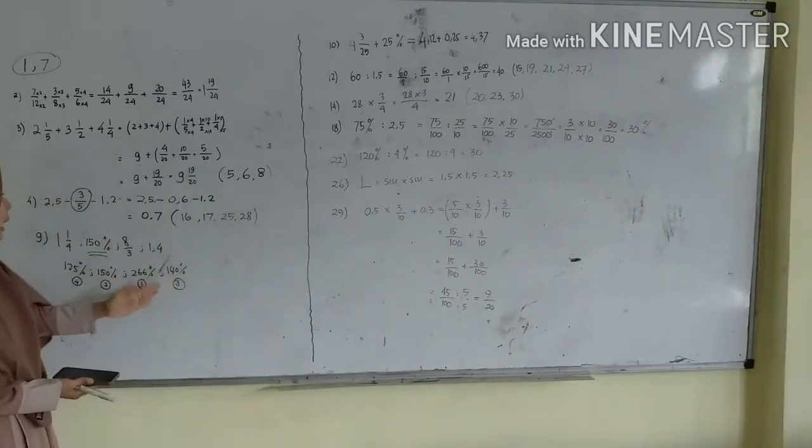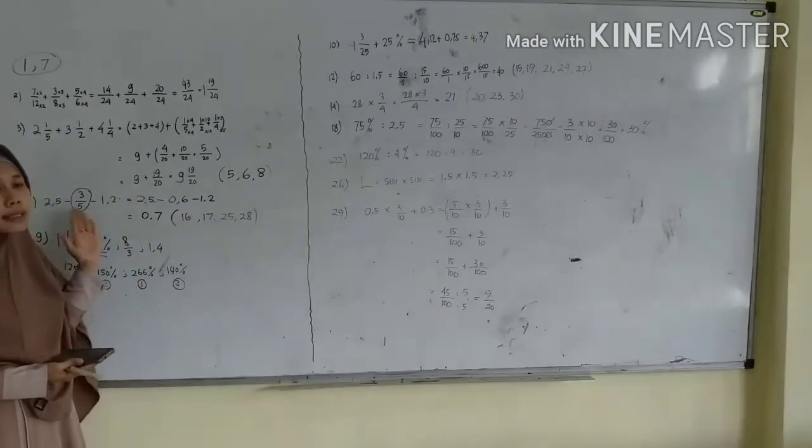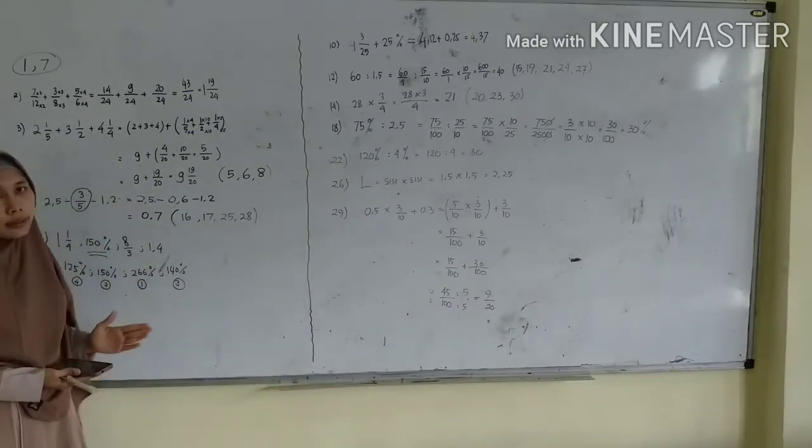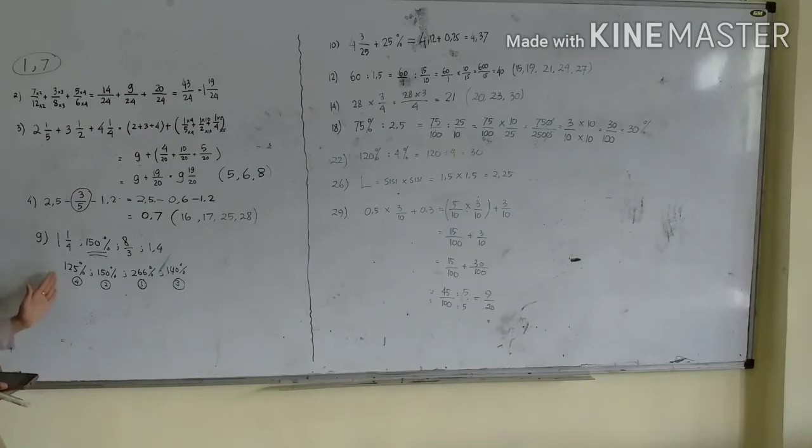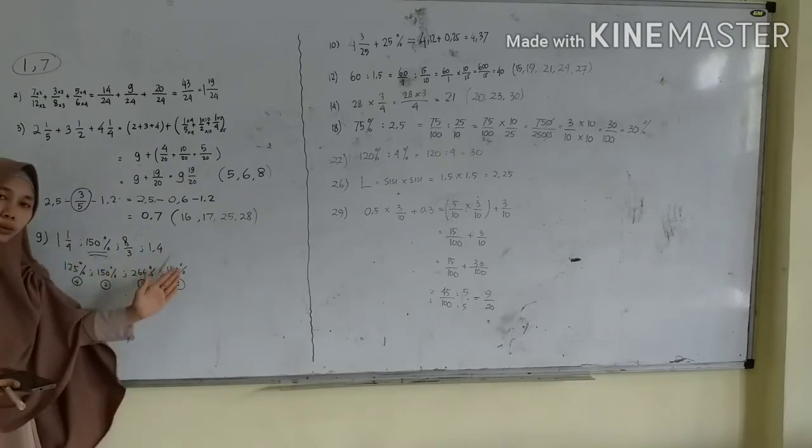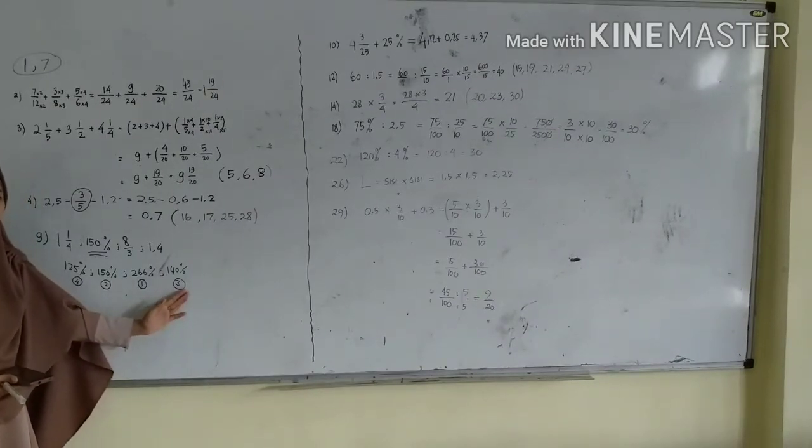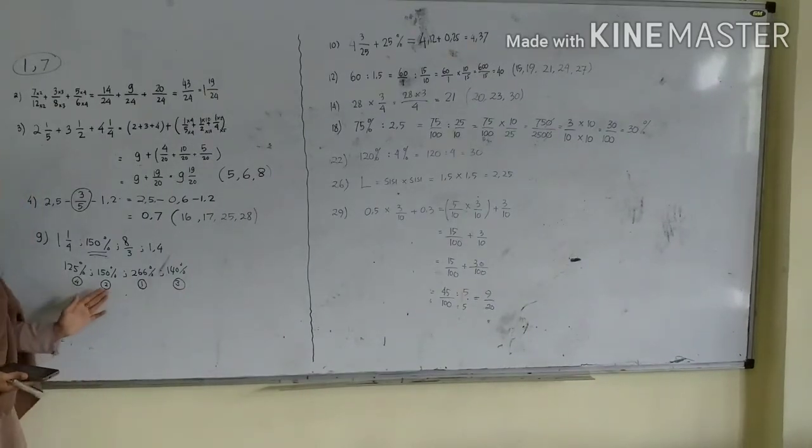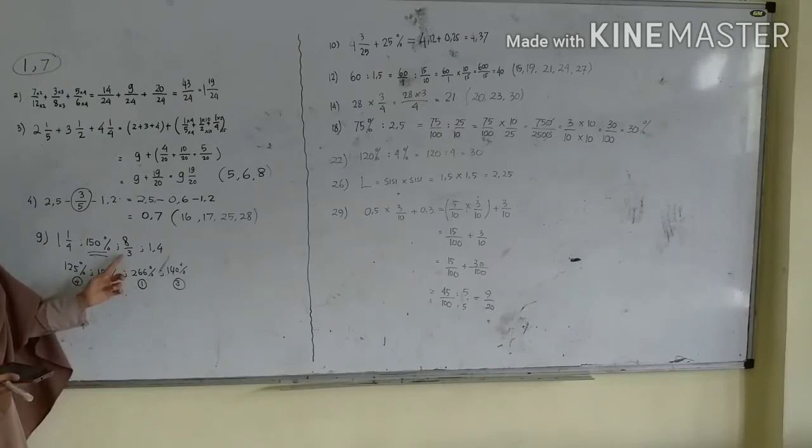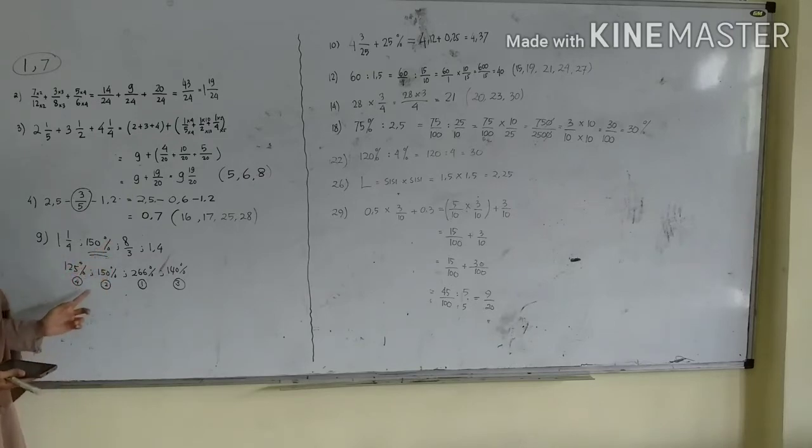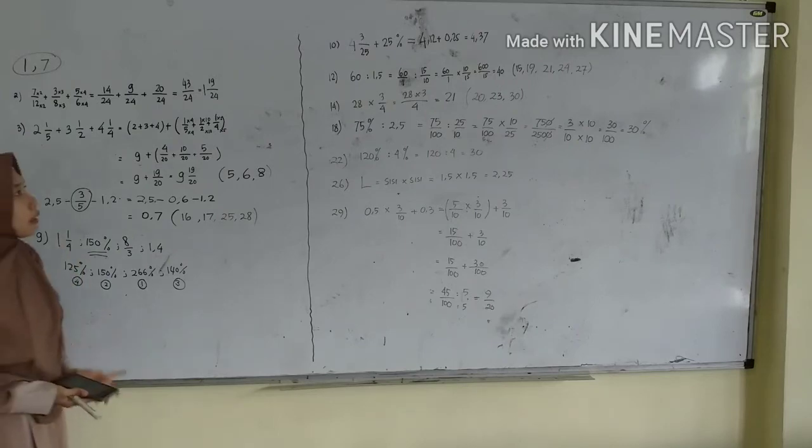Nah nomor 4 cara pemeriksaannya sama dengan nomor 16, nomor 17, nomor 25, dan nomor 28 ya. Yang dikatakan adalah kalau beda bentuknya maka samakan bentuknya. Nomor 9 diminta untuk mengurutkan dari yang paling besar. Kalau disuruh mengurutkan berarti harus sama dulu bentuknya. Kalau Ustazah disini untuk memudahkan Ustazah ubah menjadi persen semuanya. Kalau sudah baru diurutkan dari yang terbesar. Berarti yang terbesar 8/3, kemudian 150 persen, kemudian 1,4 dan 1,24.